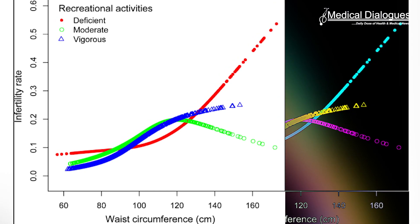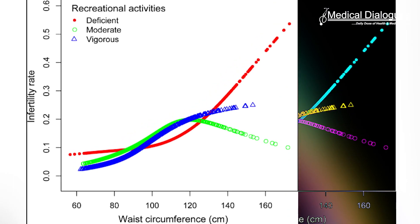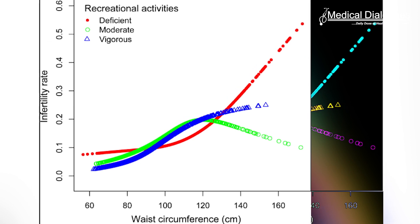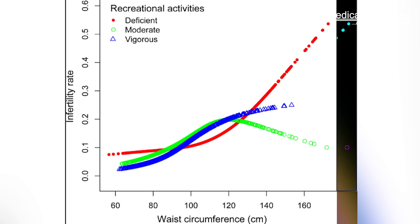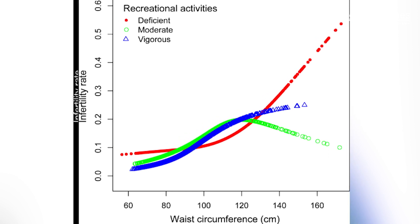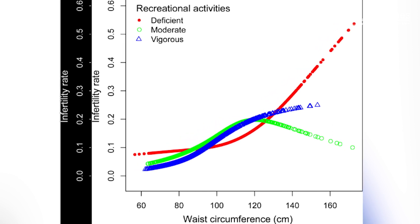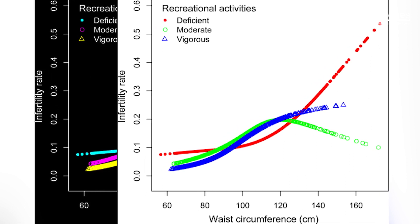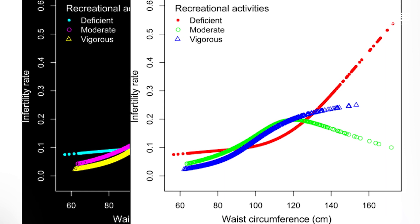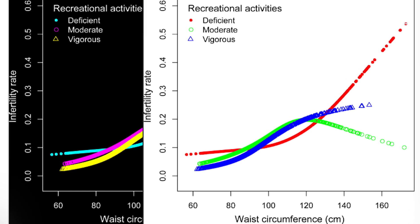Smooth curve fitting revealed a non-linear but positively dose-dependent relationship between waist circumference and female infertility. Furthermore, an inverted U-shaped relationship with a turning point at 113.5 cm was found between waist circumference and female infertility in participants who had moderate recreational activities, and a J-shaped relationship with a turning point at 103 cm was found in participants who had deficient recreational activities.